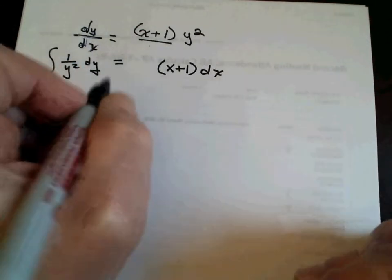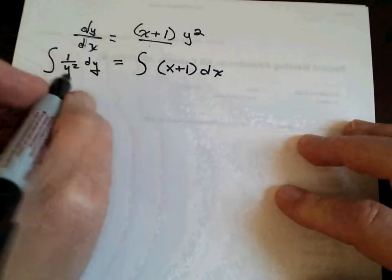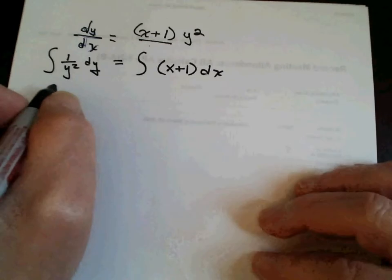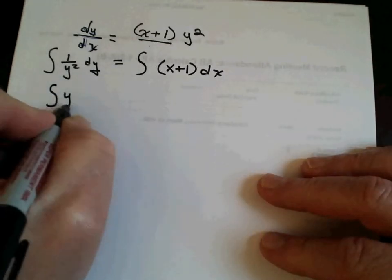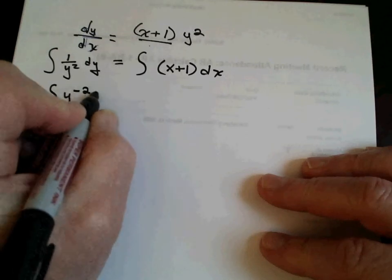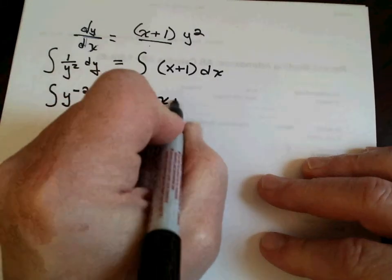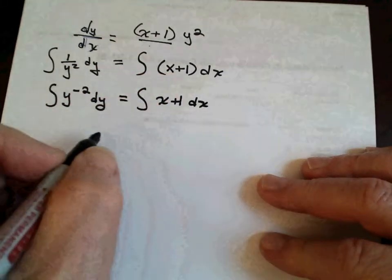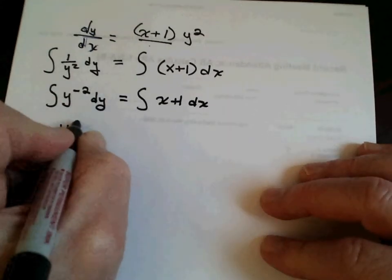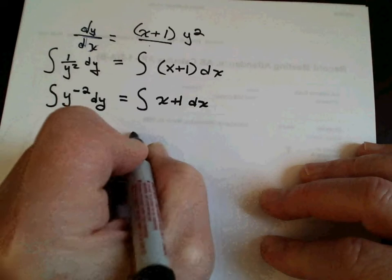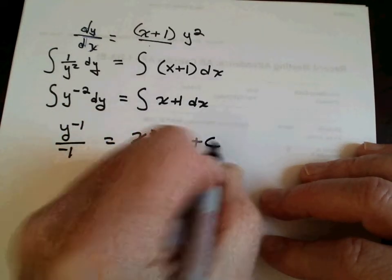Whatever you do to one side of the equation, you have to do to the other. So at this point I'm going to take the integral of both sides. What I usually do — even though it's easy and you can do it in your head — I ask students to rewrite this, because it's amazing how many careless mistakes are made. So this becomes y to the negative 1 over negative 1, which is equal to x squared over 2 plus x plus c.